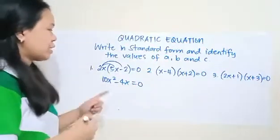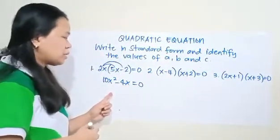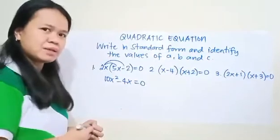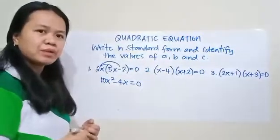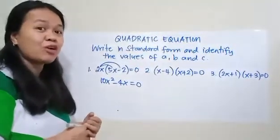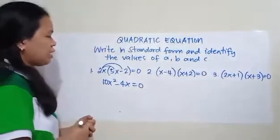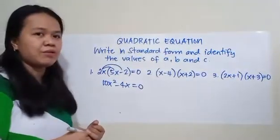Now this one is already in standard form. But one of the terms is missing. So what is the missing term? The missing term is the constant term. Now let us find the values of A,